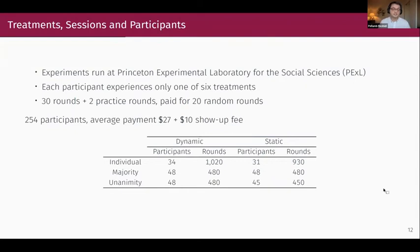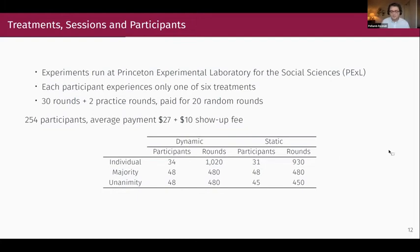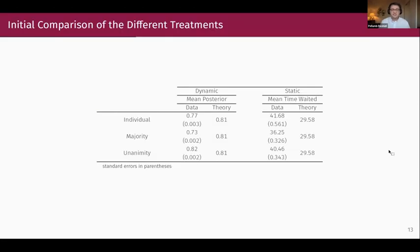Experiments were run at Princeton's Experimental Laboratory for the Social Sciences. Each participant participated in only one treatment, played 30 games plus two practice rounds. There were 254 participants total, earning on average $27 plus a $10 show-up fee. This table pretty much summarizes the results I'll be talking about today.